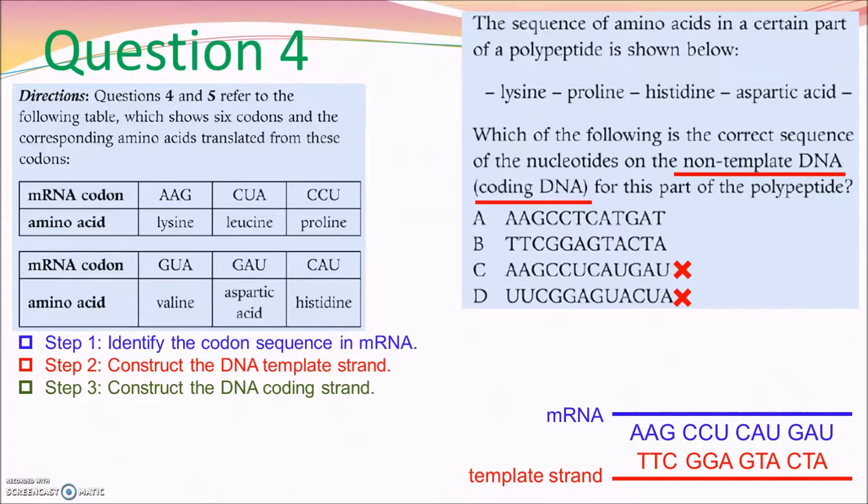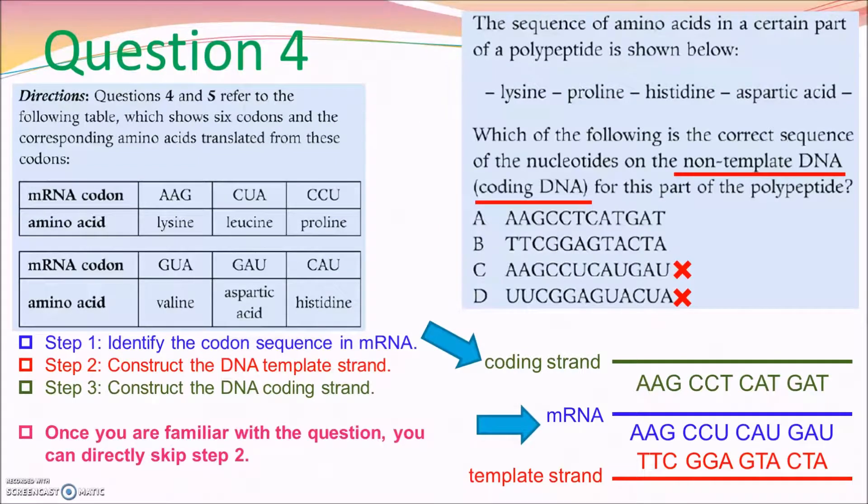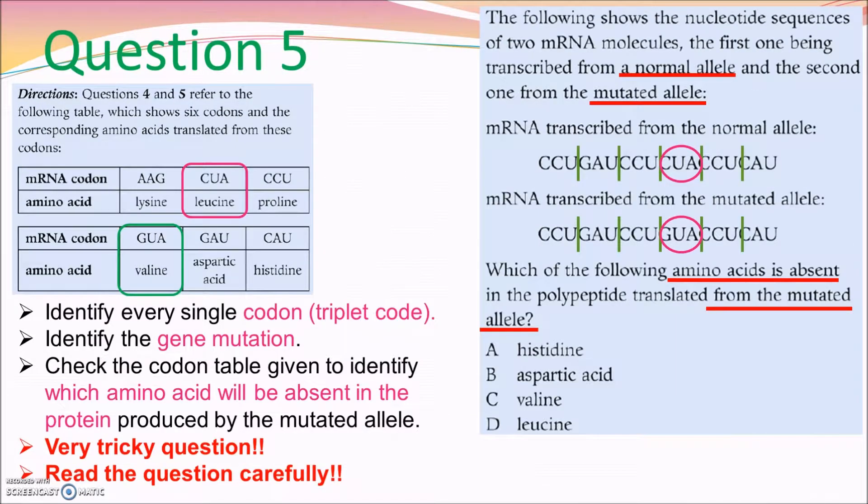Step 3, also the complementary base pair concept. You can construct the coding DNA strand finally, so you can reach the answer. And the second way is the direct way. If you are familiar with the relationship among mRNA, DNA template strand, and DNA coding strand, you realize that mRNA base sequence are same as the coding strand sequence except T is replaced by U. Therefore, you can pick up the correct answer is A.